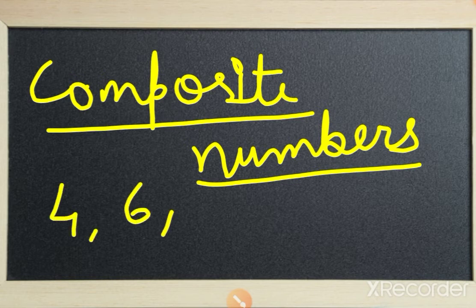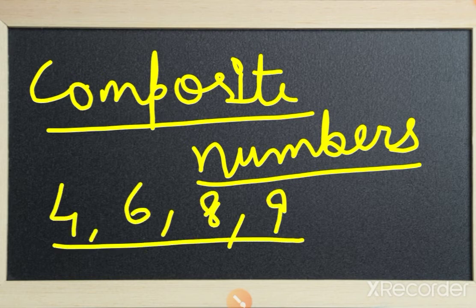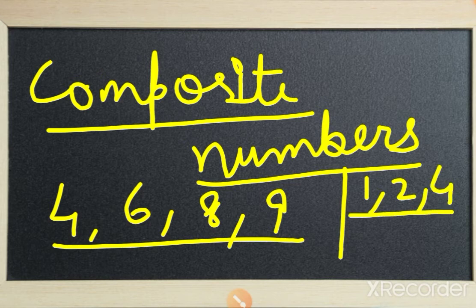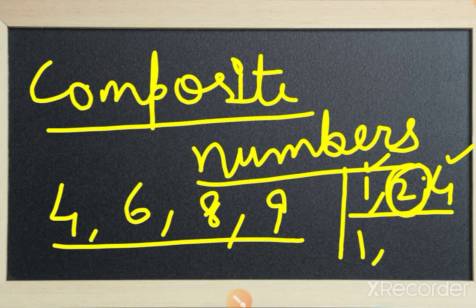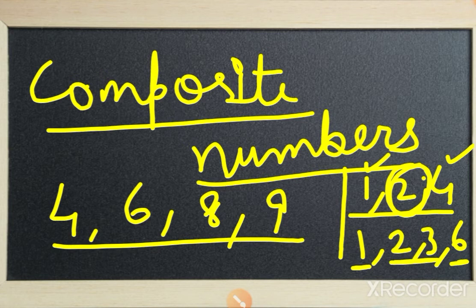For example, the numbers 4, 6, 8, and 9. If we find the factors of 4, they are 1, 2, and 4 — three factors. That means besides 1 and 4, we also have 2 as a factor. Similarly, the factors of 6 are 1, 2, 3, and 6. Here besides 1 and 6, we also have 2 and 3 as factors. Numbers which have factors other than the number itself and 1 are known as composite numbers.